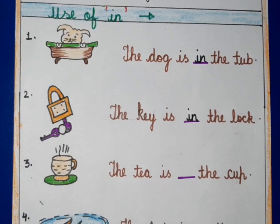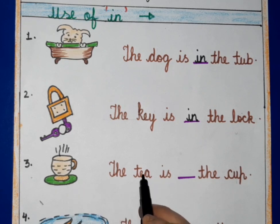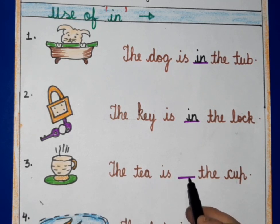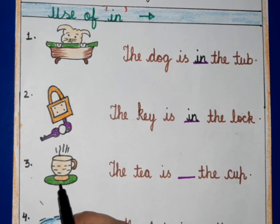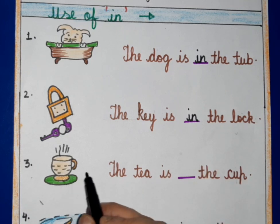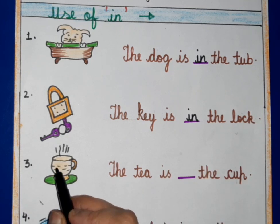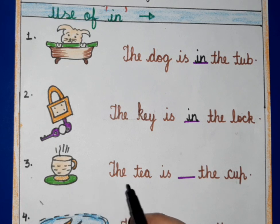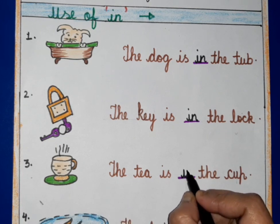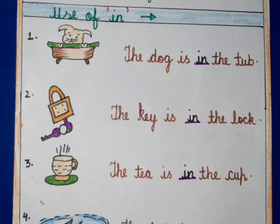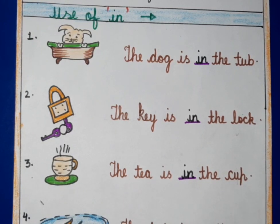As you can see, the tea is in the cup. Chai hai kap ke andar, aap deekh saktay hain. So we will write 'in' here. The tea is in the cup.